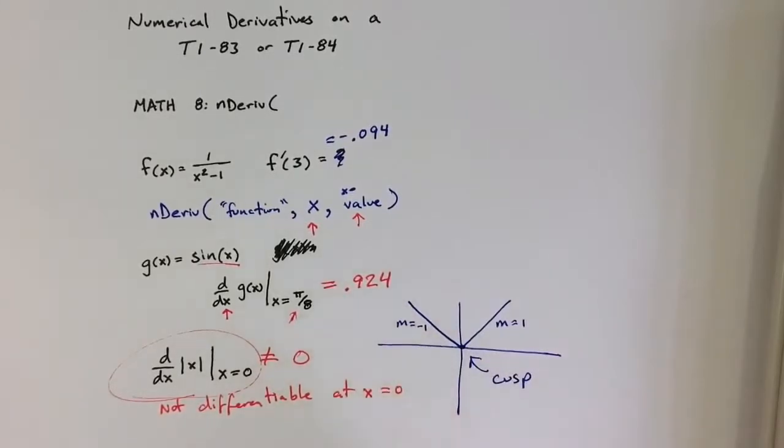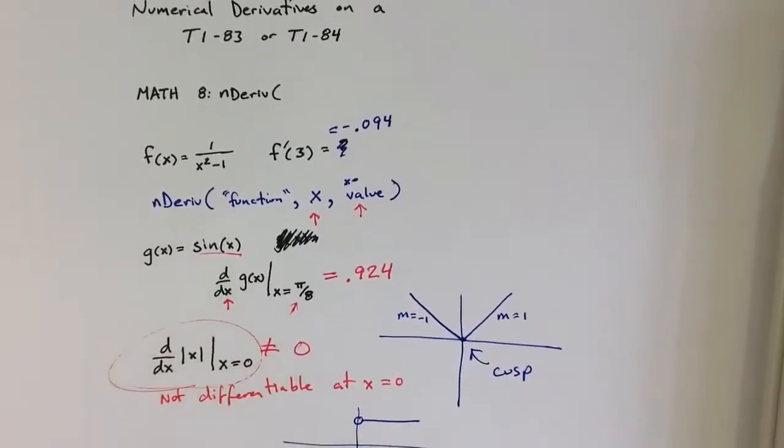The derivative function is actually undefined at 0. It's positive 1 for all positive numbers, it's negative 1 for all negative numbers.